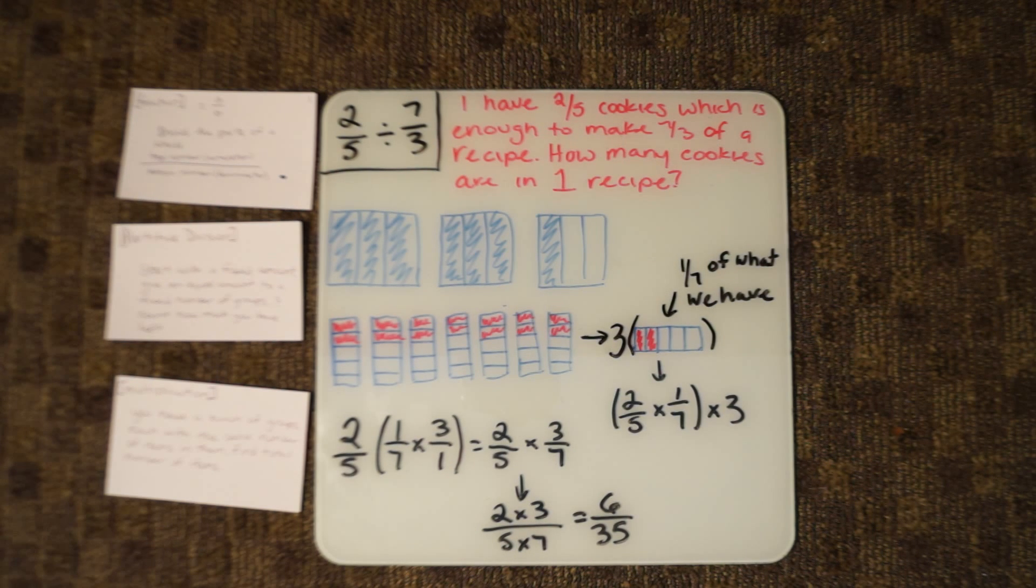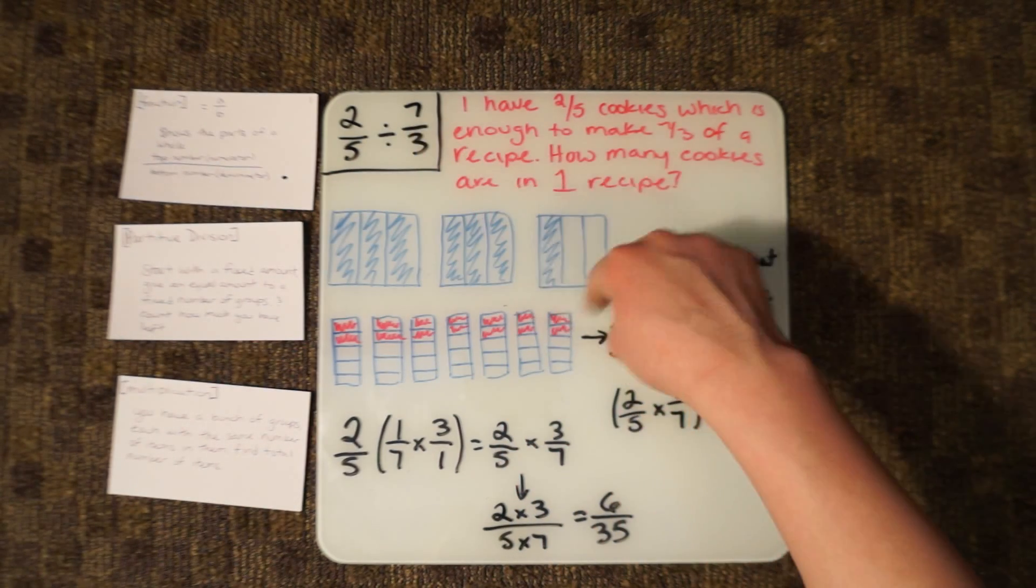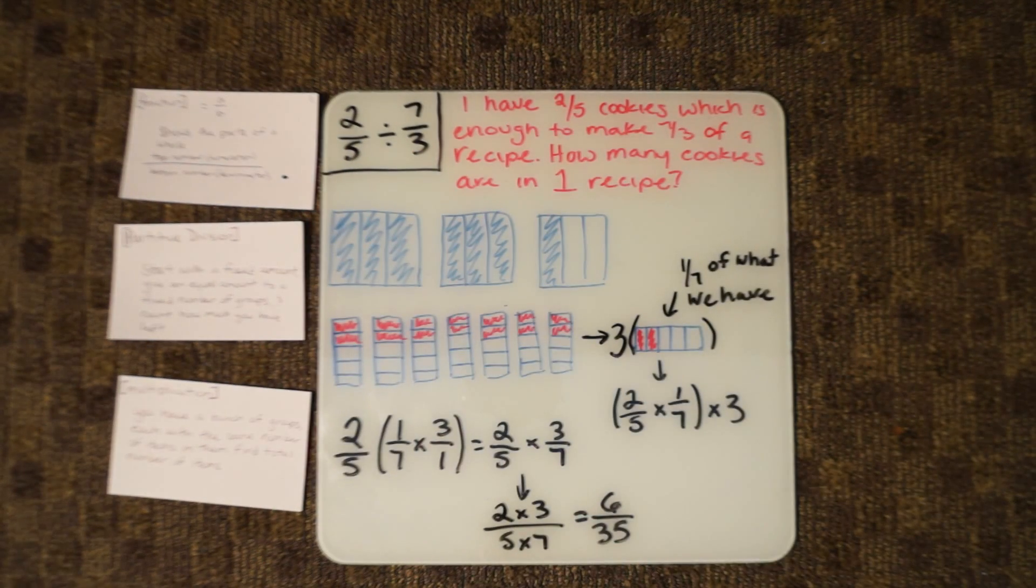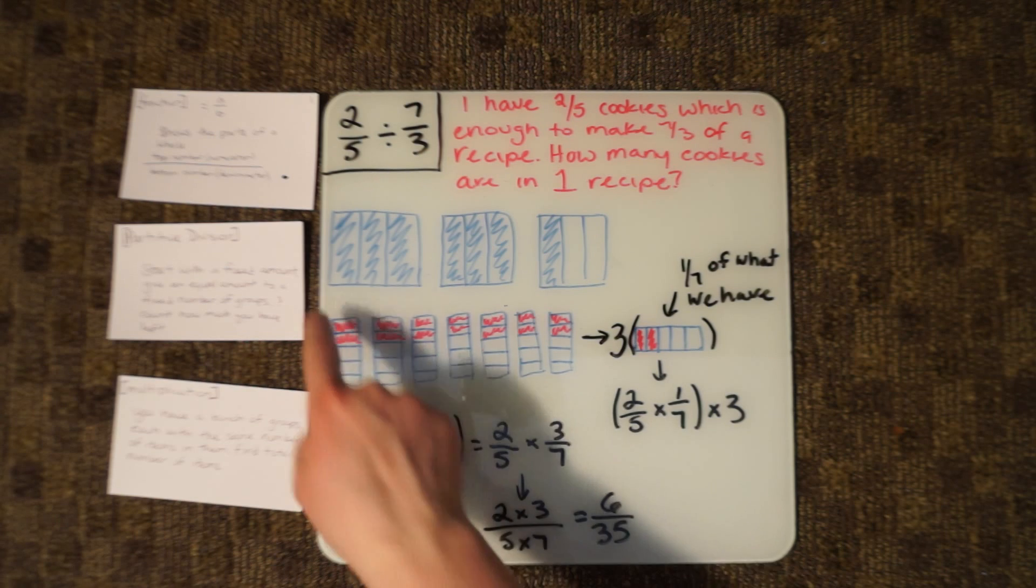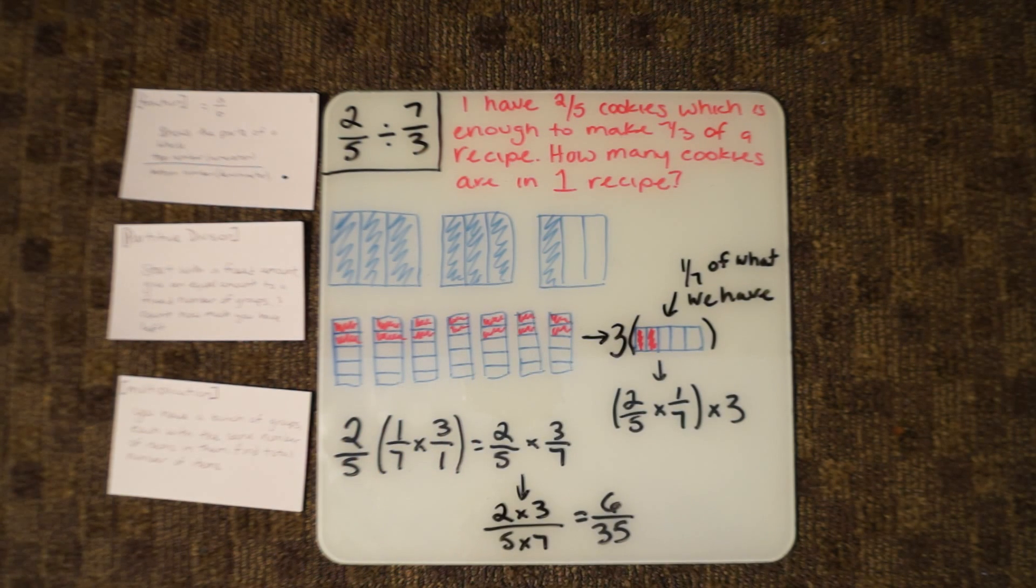Our first step is to work with the 7/3. We drew out our holes right here, and each hole was split into 3 parts because of the denominator. The denominator tells you how many parts your hole needs to be cut into. We shaded in 7 of them because that's our numerator, and our numerator says how many pieces of the hole that we are considering.